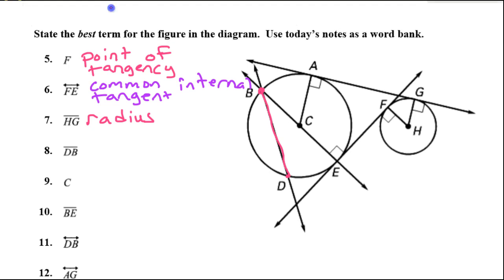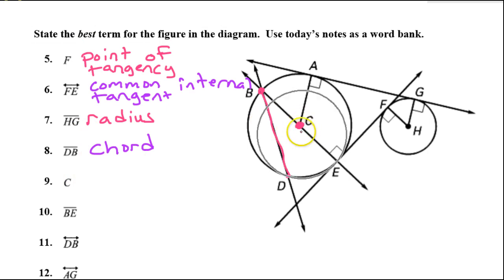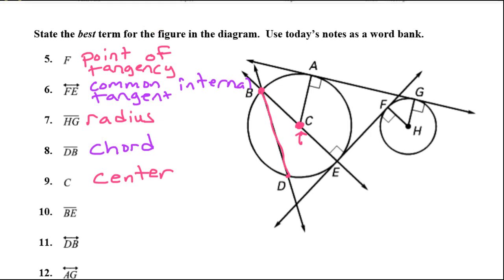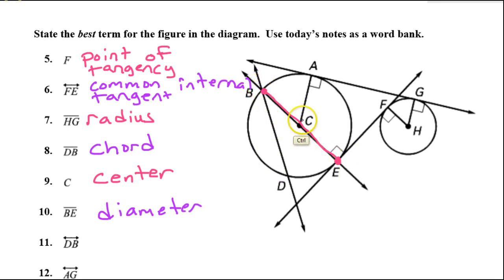Segment DB — a chord is a segment that begins and ends on the circle, so that is a chord. What about point C? Point C is the center of the circle, so point C is a center. How about segment BE? That's a diameter — a diameter is a chord that passes through the center of the circle.